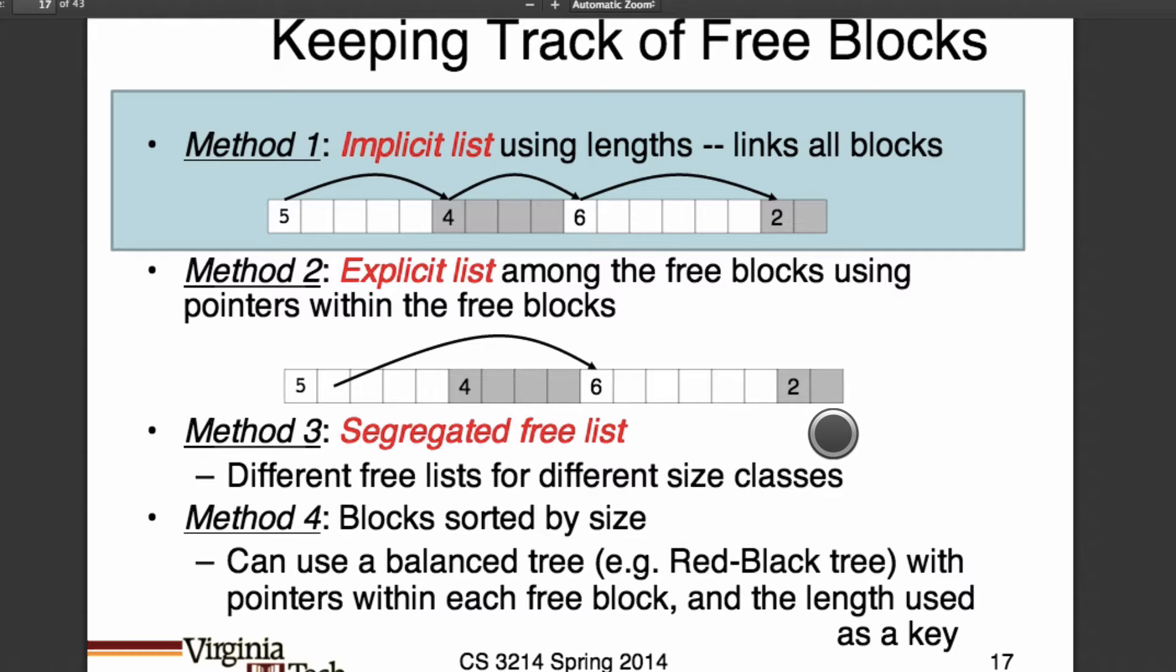And so what we want to do here is we want to go over implicit lists and free lists. And so the way that your computer takes track of this memory and where it's stored and the size of the heap depends on how you keep track of it really. So one way you can do is with an implicit list. And the way this works is that imagine your heap.